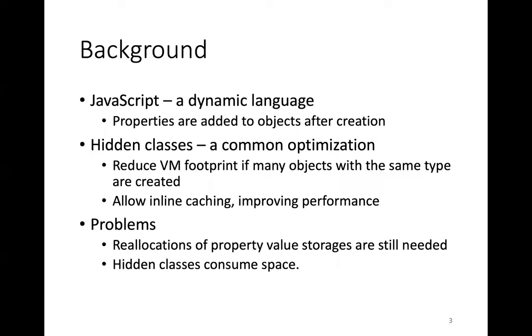JavaScript is a dynamic language where we can add properties to objects after they are created. Hidden Class is a well-known optimization technique to cope with this dynamic behavior. This technique can reduce VM footprint if many objects with the same type are created, and it also allows inline caching, which is another well-known optimization technique to improve performance.